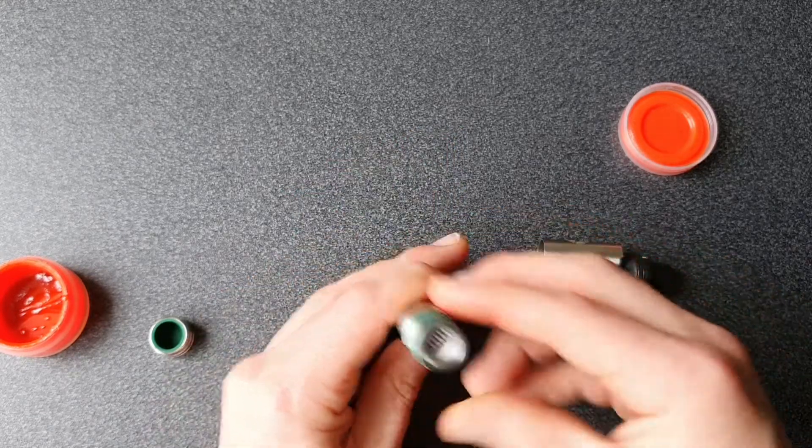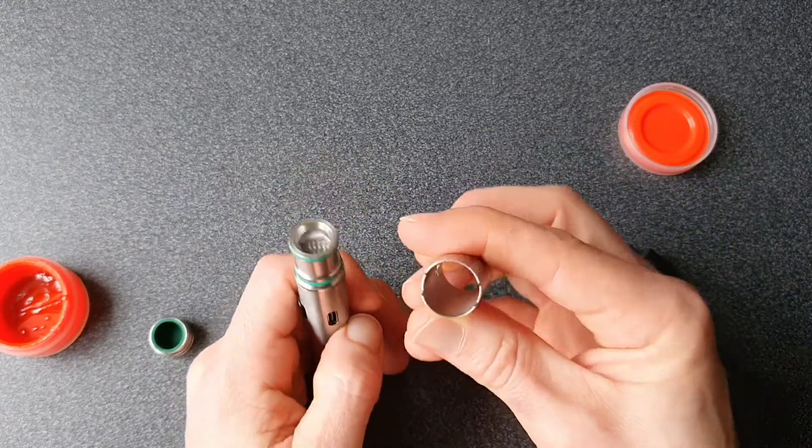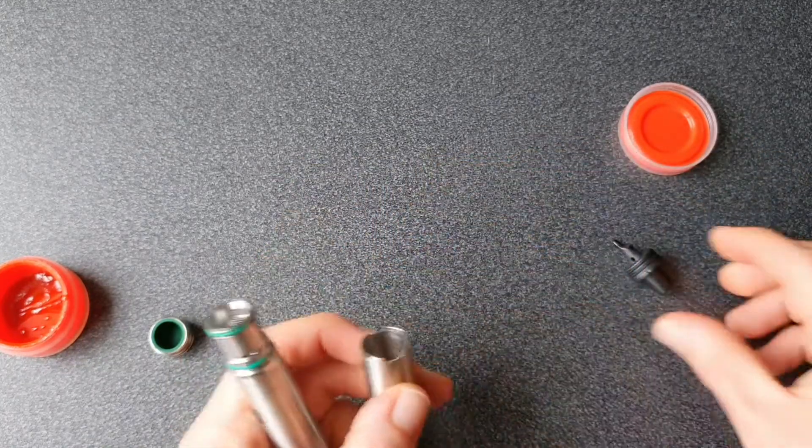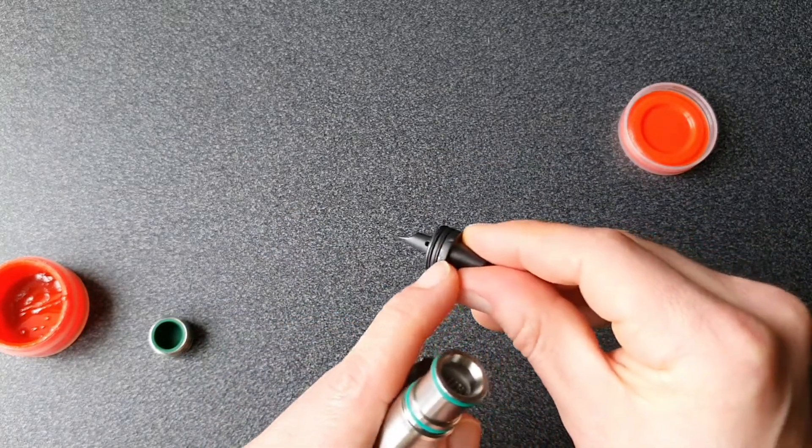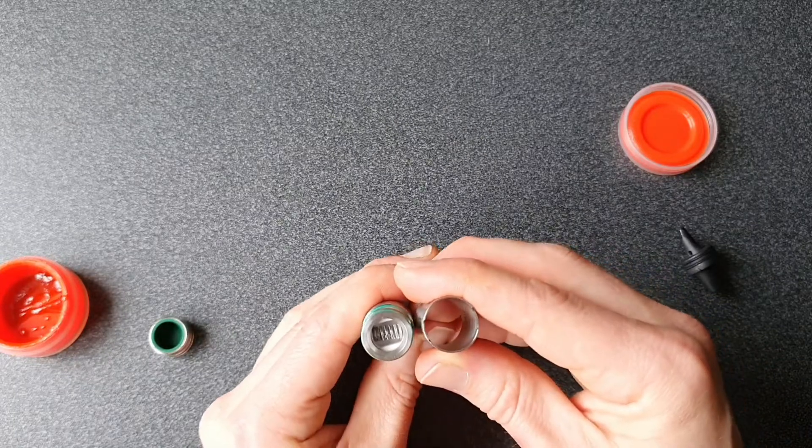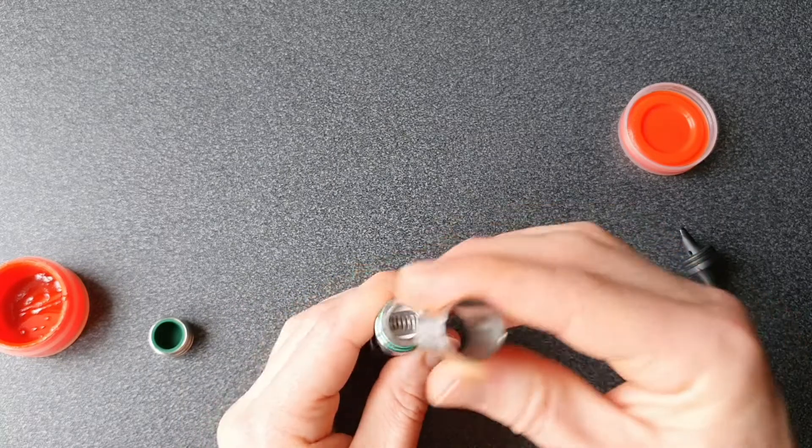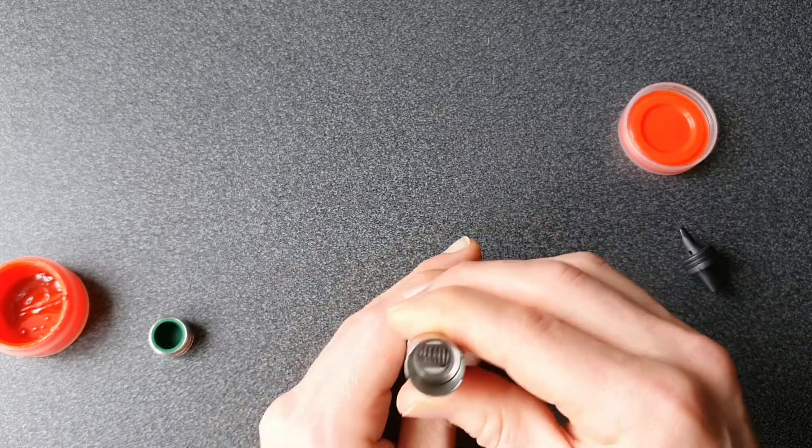So you have your coil there and then you have your little airflow cap with notches in. These notches align with the notches on the mouthpiece. So you want to line them up with your coil so they align like that and then pop that on.